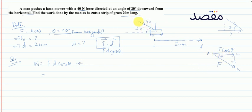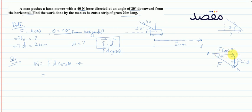Force जो lawn mover पर acting है, उसके दो components हैं — एक horizontal component और एक vertical component। Simple trigonometric ratios से: सामने वाली side यानि perpendicular = F sinθ, और adjacent side = F cosθ।